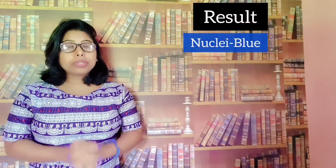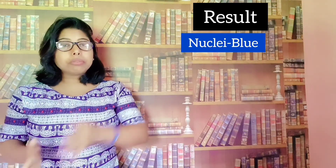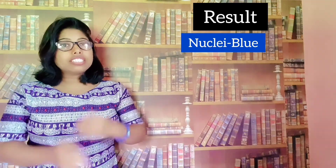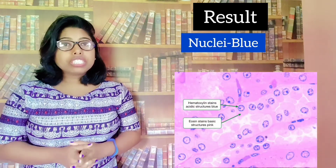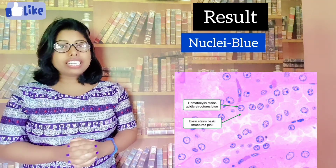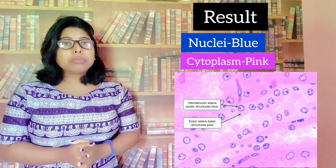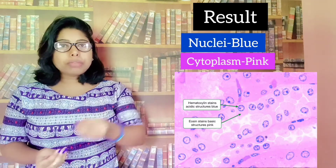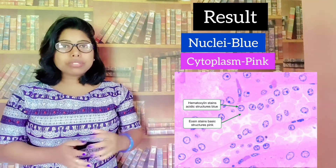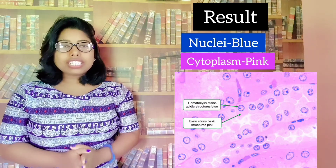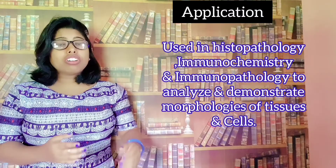Now for the results: the nucleus stains blue, because the first principle was that the acidic dye will stain the basic component of the cell — hematoxylin stains the nucleus blue. The cytoplasm stains pink in color. The extracellular matrix also stains pink in varying degrees of pink color. This is the result of H&E staining.